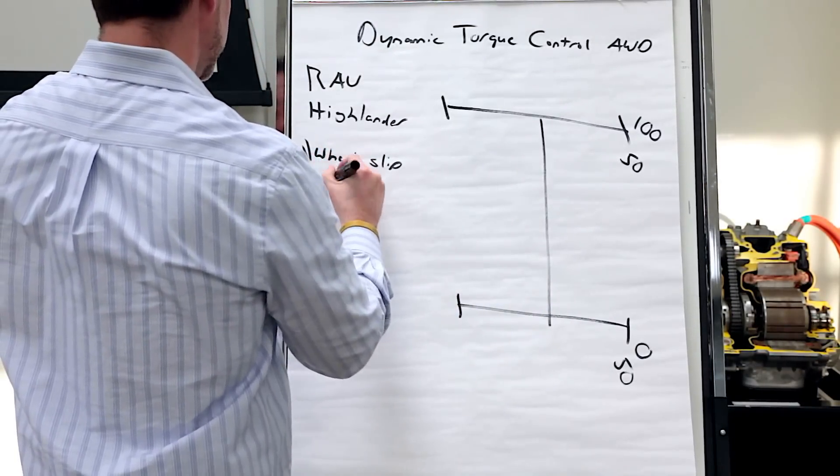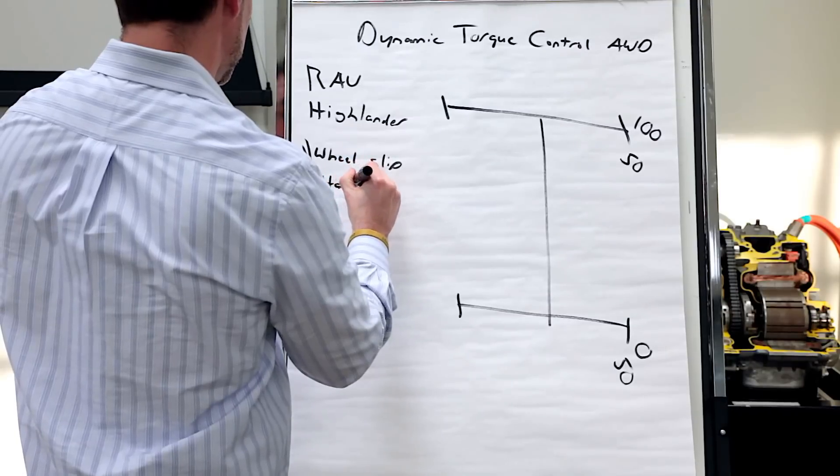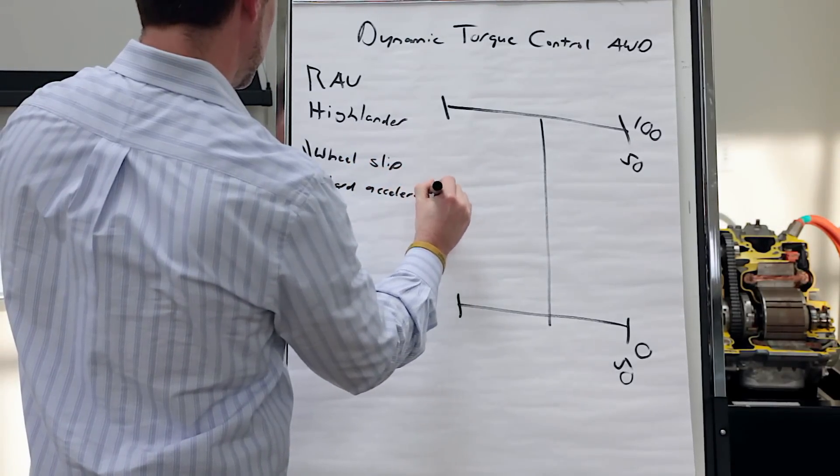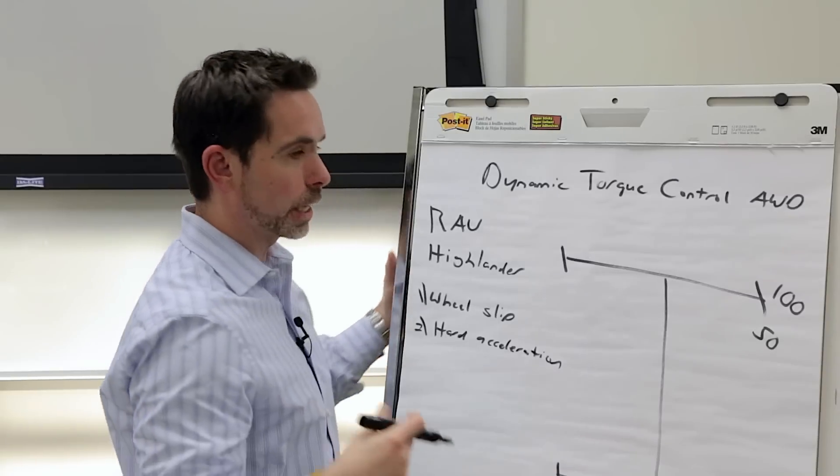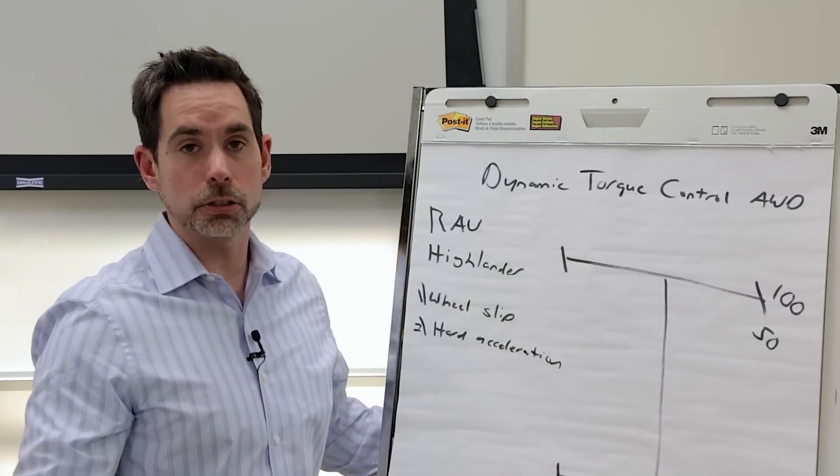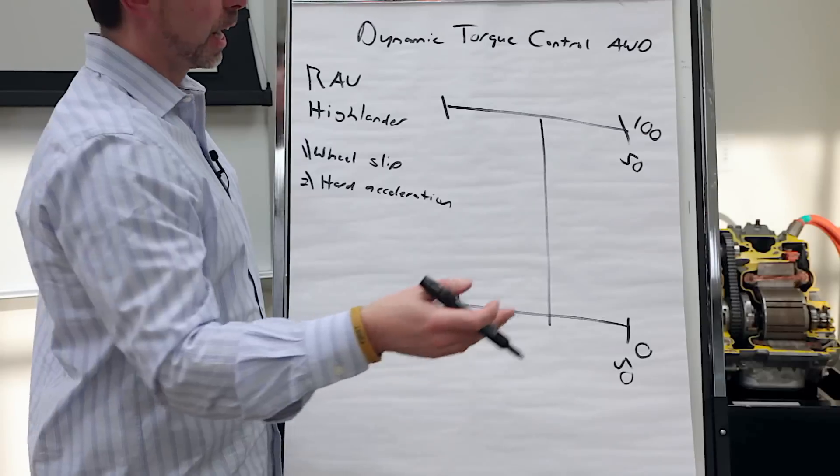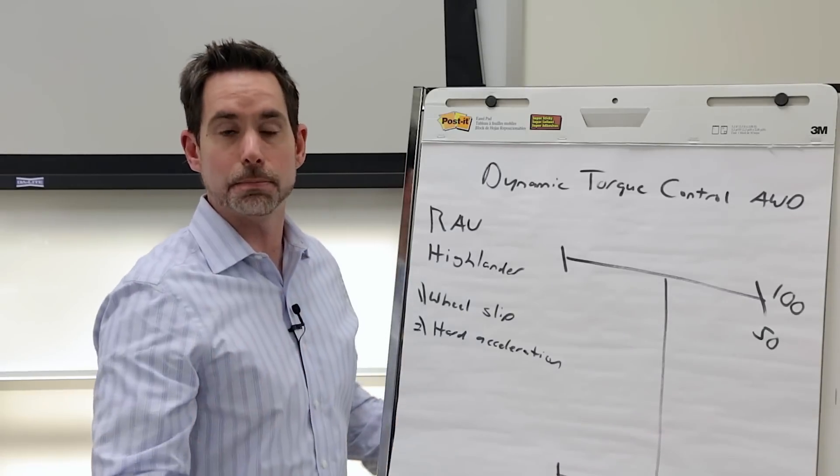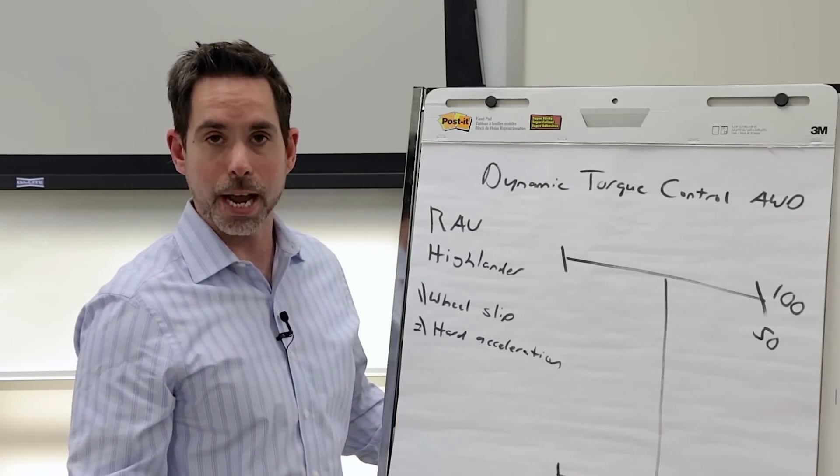Number two is hard acceleration. So, even on a dry day, if I'm going to a stop light, light turns green, I put my foot to the floor, I can get up to 50% of the power going to my rear wheels. Why? Because it's an anticipation of a loss of traction.